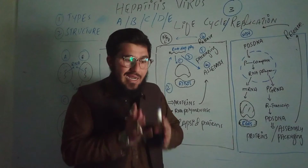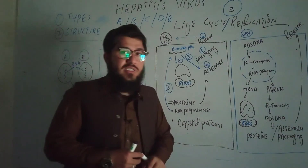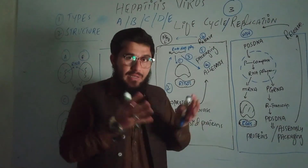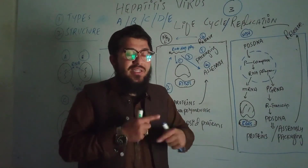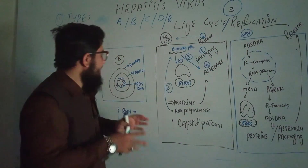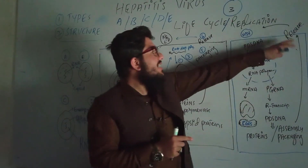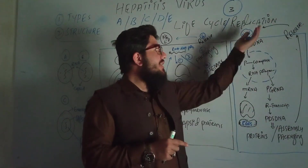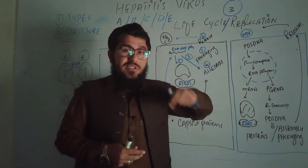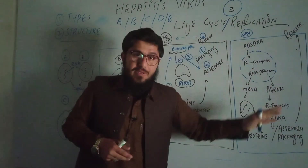Meanwhile, the messenger RNAs go to the ribosomes for translation, producing all the necessary proteins. These proteins and the newly synthesized partially double-stranded DNA then assemble together. After assembly comes packaging: each HBV particle gets the partially double-stranded DNA and the capsid. As they are released they acquire an envelope from the hepatocyte, then go free to find another hepatocyte, inject it, and infect it. This completes the life cycle and replication of HBV.